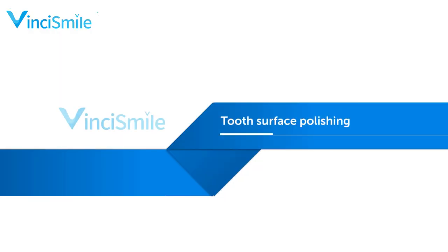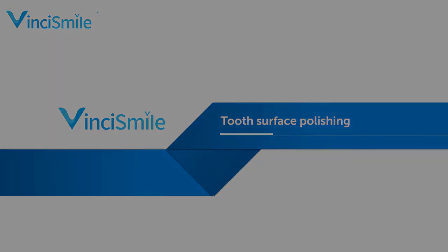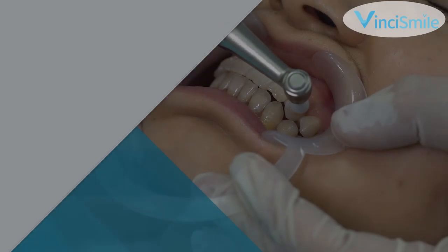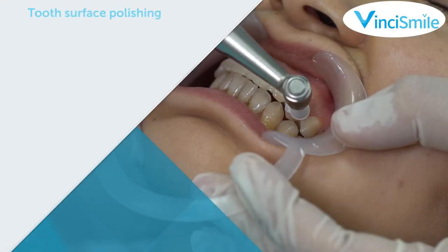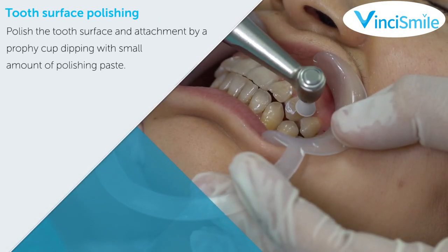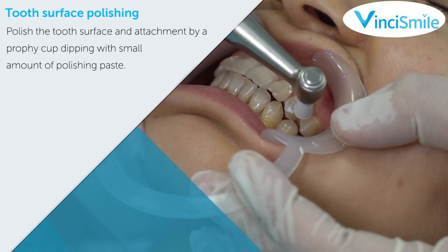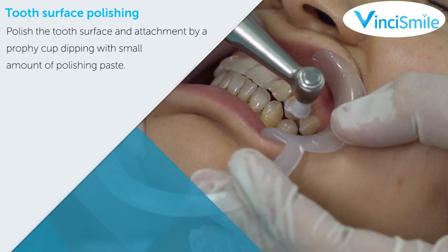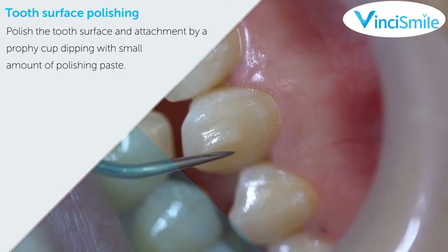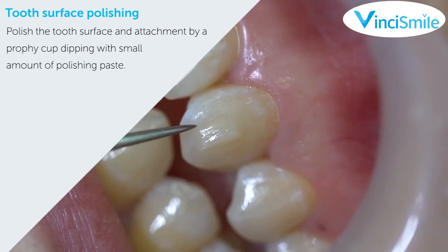Tooth surface polishing: polish the tooth surface and attachment using a prophy cup dipped with a small amount of polishing paste. The attachment is now bonded.